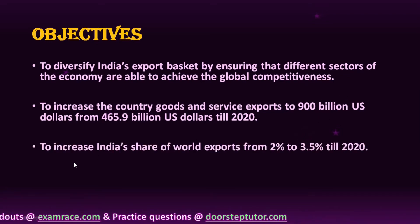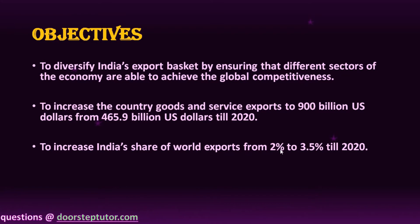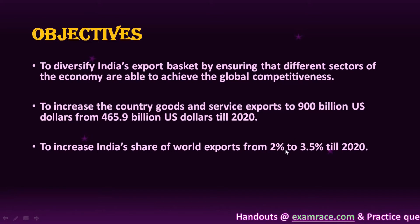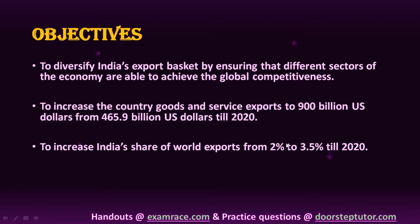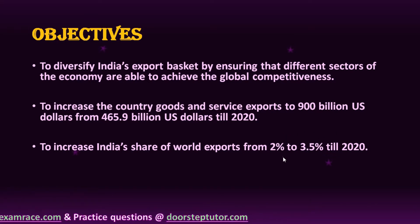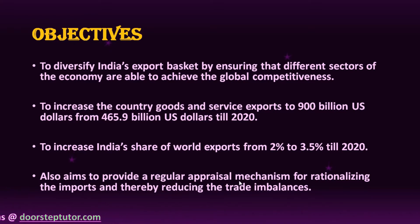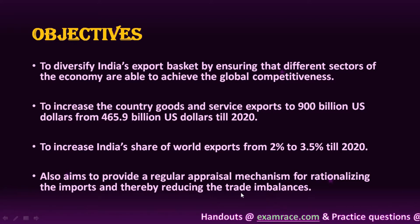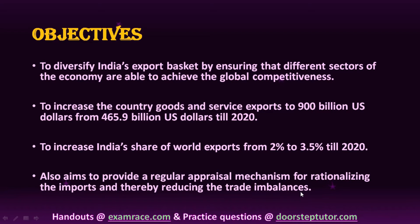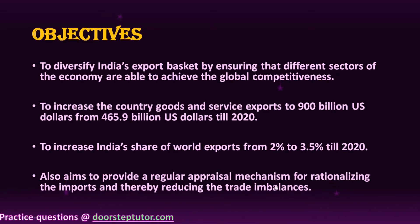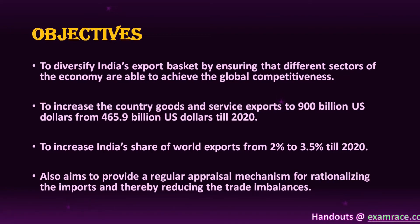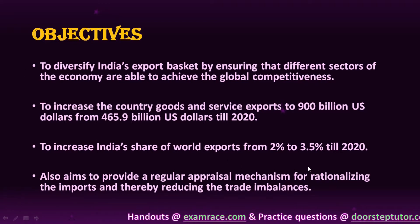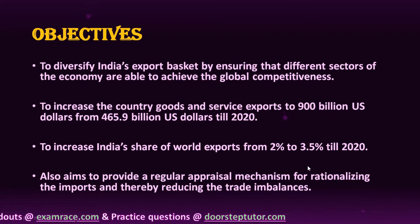Another objective is to increase India's share of world exports from 2% to 3.5% till 2020. Our exports were basically around 2% of world trade in 2015-16, and the government wanted to increase this to 3.5%. It also aims to provide a regular appraisal mechanism for rationalizing imports and thereby reducing trade imbalances. We can monitor this through the balance of payment account, which covers all export and import transactions — whether goods, merchandise, services, or capital account transactions.